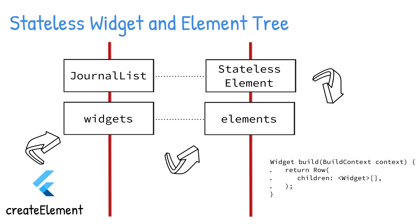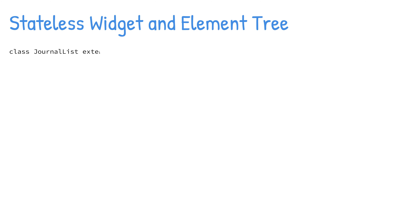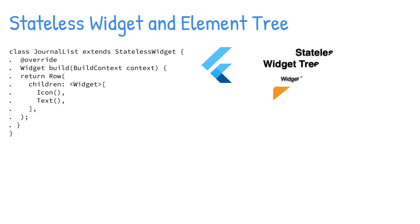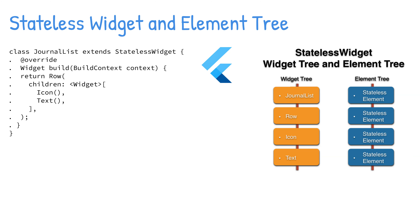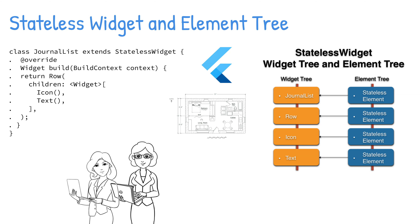This process results in two trees: the widget tree and the element tree. The following code shows the Journalist stateless widget that has row, icon, and text widgets representing the widget tree. The Flutter framework asks each widget to create the element, and each element has a reference back to the widget. This process happens for each widget down the widget tree and creates the element tree. Note that the developer creates the widgets and the Flutter framework handles mounting the elements, creating the element tree.